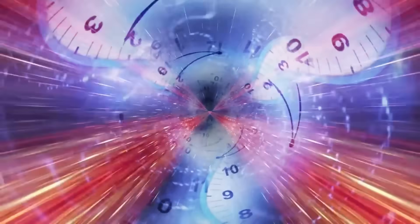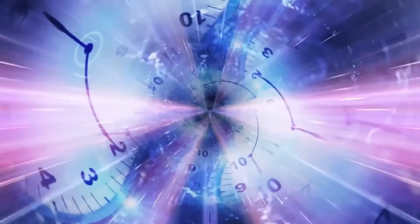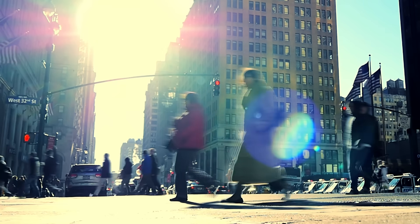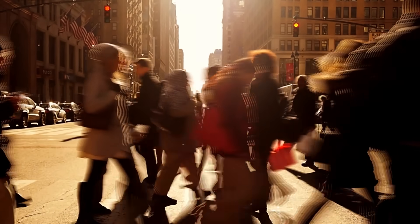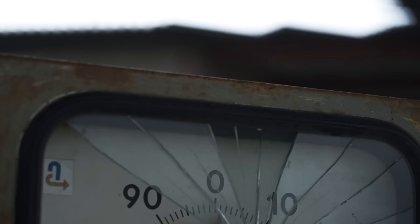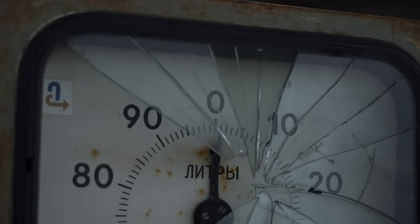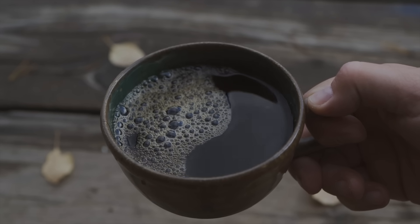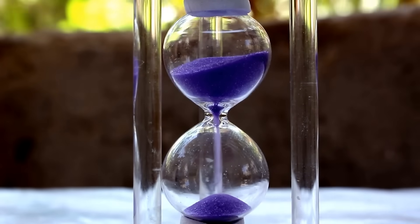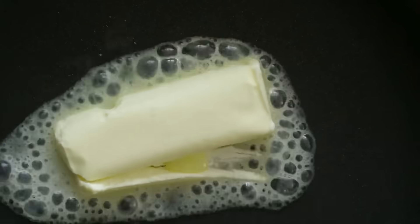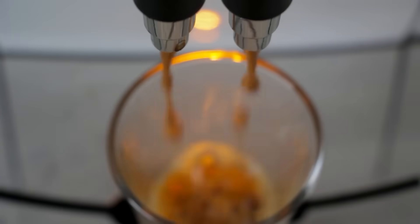The Arrow of Time: We experience time as a constant forward motion. We are born, we age, and eventually we die. A glass shatters into pieces, but those pieces never reassemble. A cup of hot coffee cools down over time, but never spontaneously reheats itself. This is known as the arrow of time, a concept in physics that explains why time always moves forward and not backward.